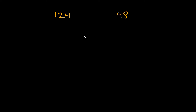The first thing you want to do is find the factors of each of your numbers. You can do that a couple of different ways — here I'm going to use the factor tree method. So 124: let's break that down. 124 is even, so I can divide it by 2, which breaks it down into 62 times 2.